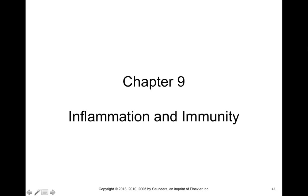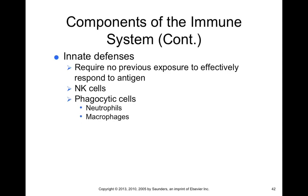In chapter 9, we're going to talk about inflammation and immunity, starting with the innate defenses of immunity. The innate immune response requires no previous exposure to effectively respond to a given antigen. Antigens are basically molecules that can stimulate an immune response, and they can be things like proteins, glycoproteins, glycolipids — something the immune system can recognize as being foreign.